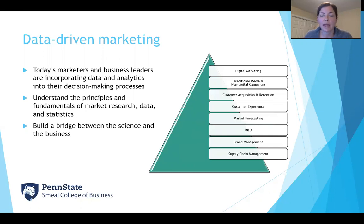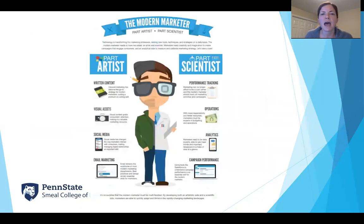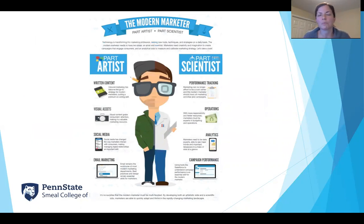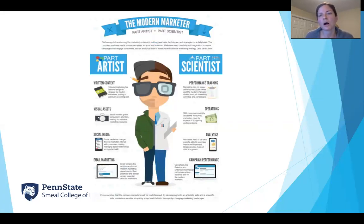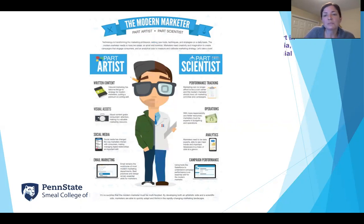It's a data-driven world in marketing now. There's a real expectation that the modern marketer is going to be both an artist — writing content, working with creative, managing social media, building brand personas and brand positioning — and also, to some degree, a scientist. That means understanding where data is coming from, knowing how to identify the right data sources, tracking them over time, and applying data to the challenges of the folks they're working with within the organization. We've got to really marry those two components, and that's what this program is about.